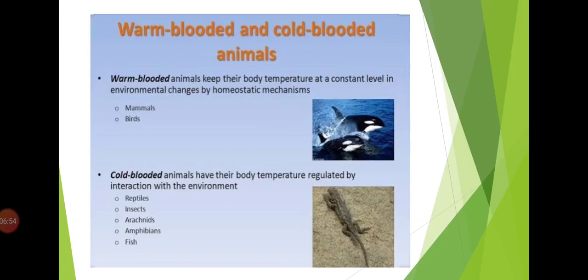The body temperature of the cold-blooded animals is the same as the temperature around them. Now those animals whose body temperature around changes, like if it is winter then their body temperature will be accordingly. If it is summer, then their body temperature will be accordingly. If they are warm-blooded animals, they are called the cold-blooded animals.